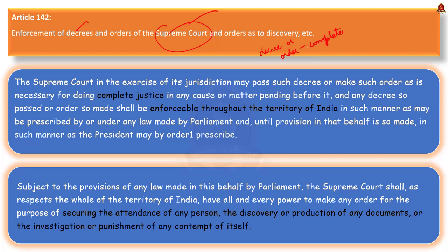This decree or order shall be enforceable throughout the Indian territory. Thus, this article gives the Supreme Court a unique power to do complete justice between the parties. For example, a parliamentary law made with respect to this kind of Supreme Court's order can secure the attendance of any person, the discovery or production of any documents, or the investigation or punishment of any contempt of itself.